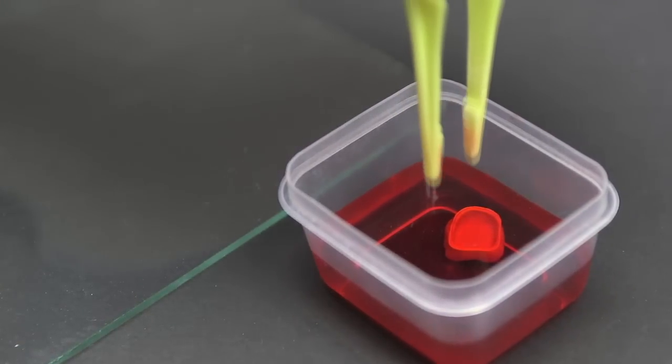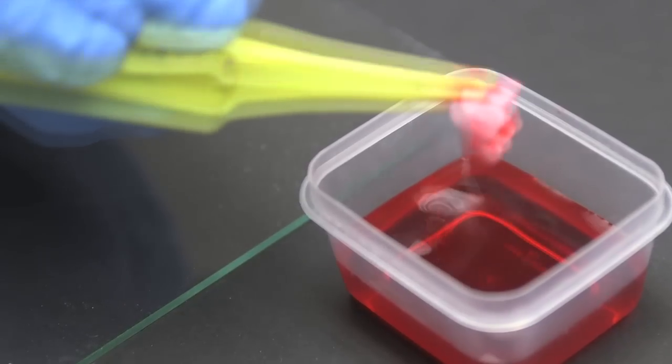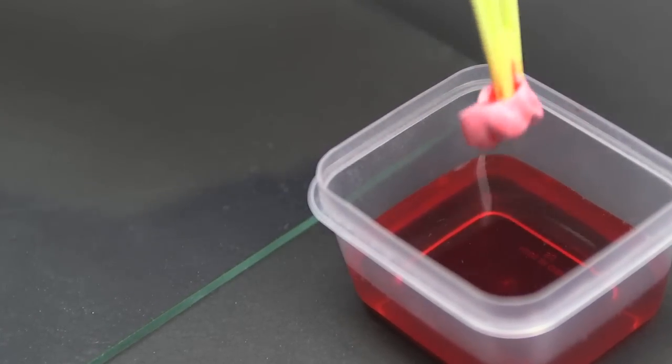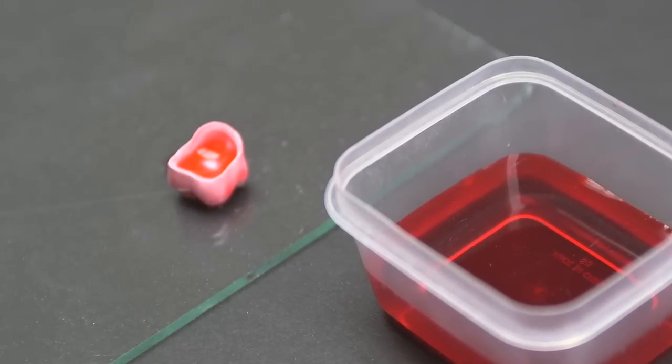After 15 seconds, using the tweezers, remove the crown from the liquid and place it onto a glass plate. A paper towel should not be used as it will absorb the shading liquid from the crown.